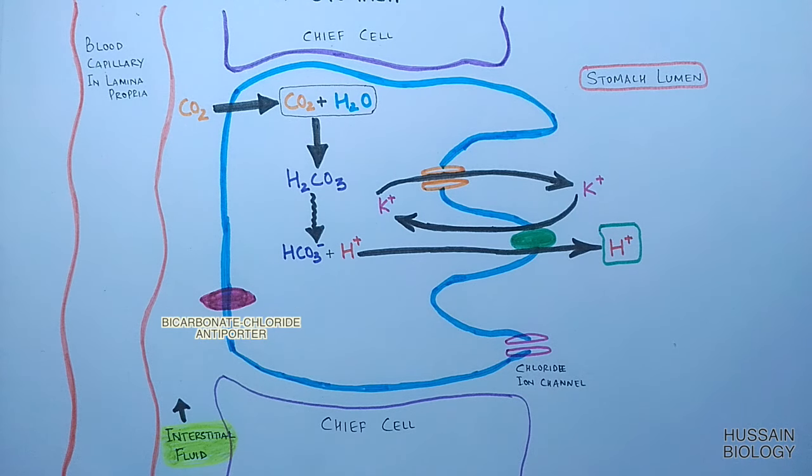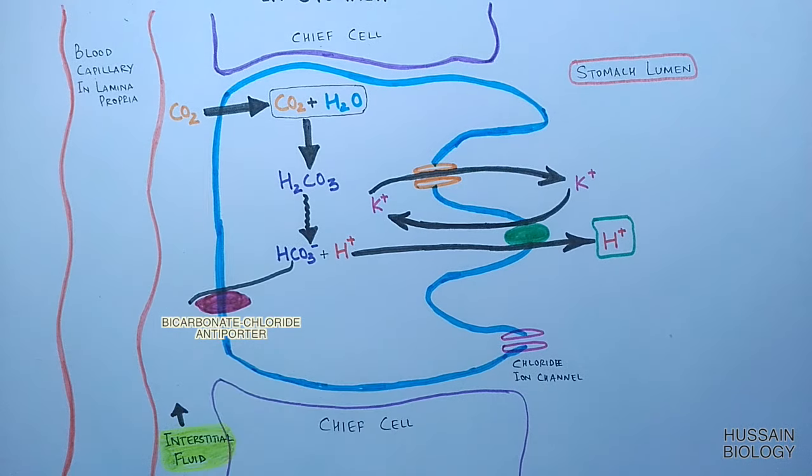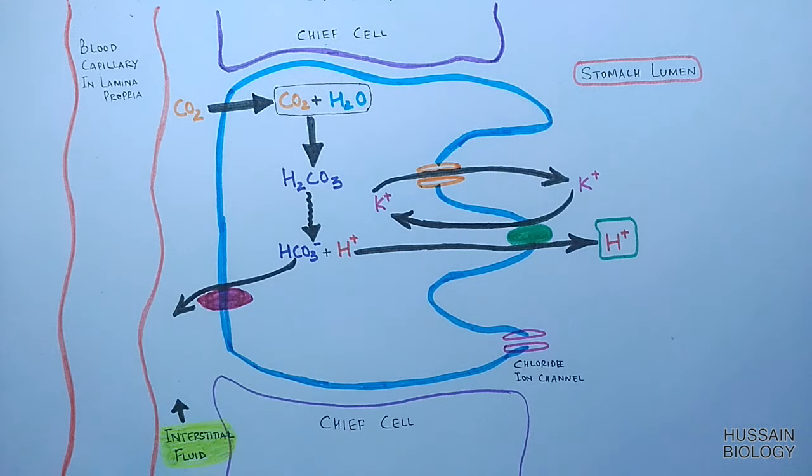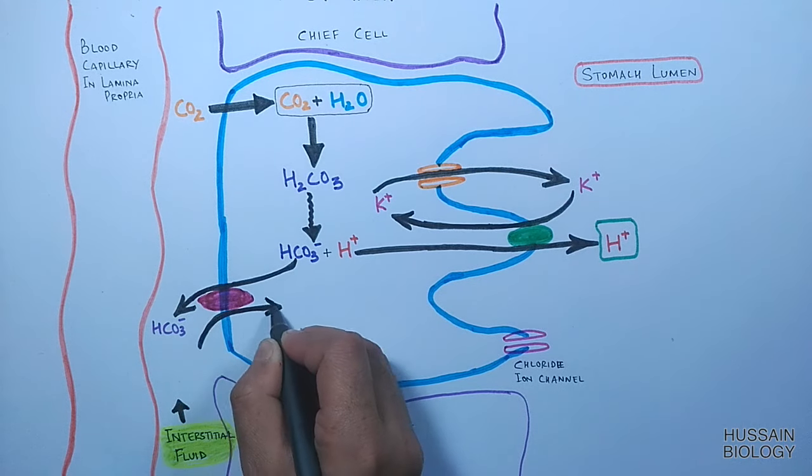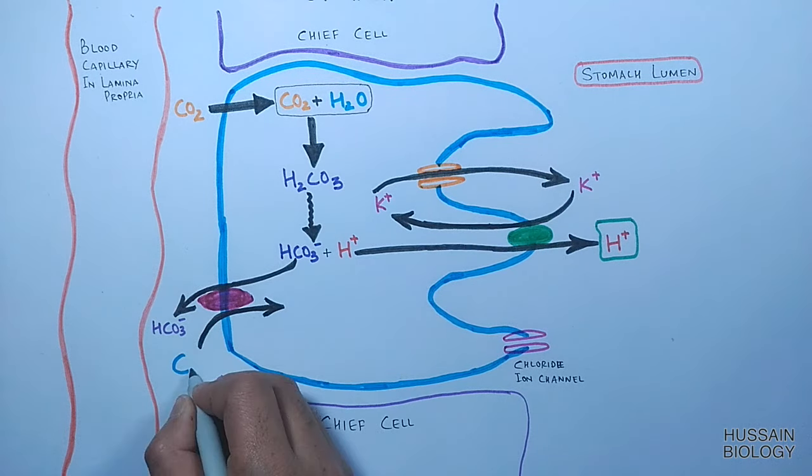In the next step, the bicarbonate ion is pumped out of the parietal cell into the interstitial fluid through the bicarbonate-chloride antiporter. Simultaneously, the chloride ion is taken inside the parietal cell in exchange for the bicarbonate ion.